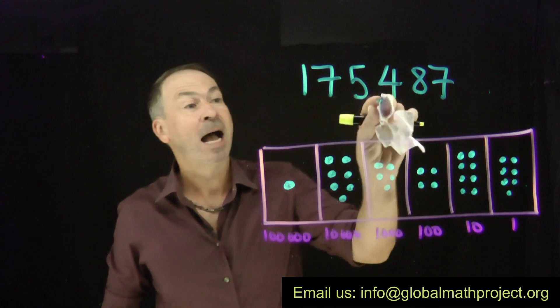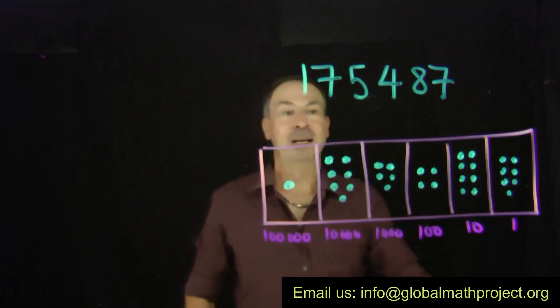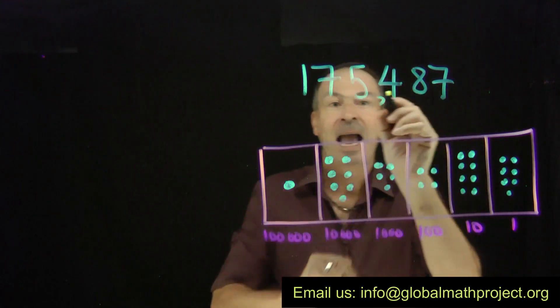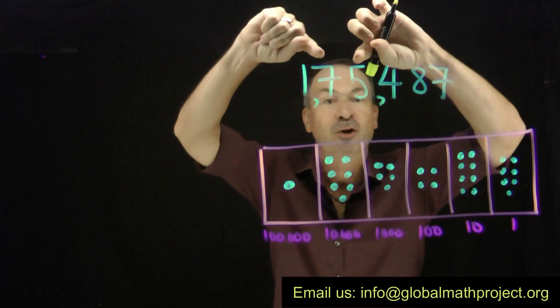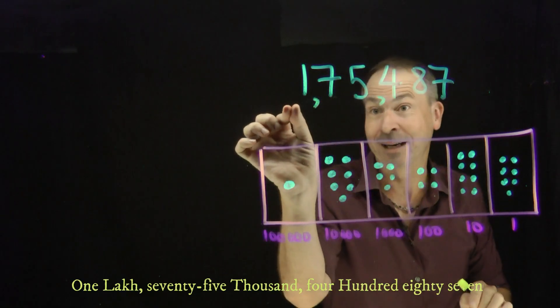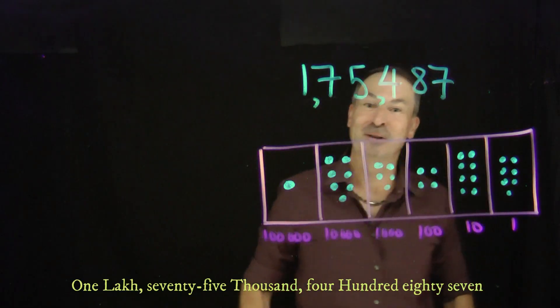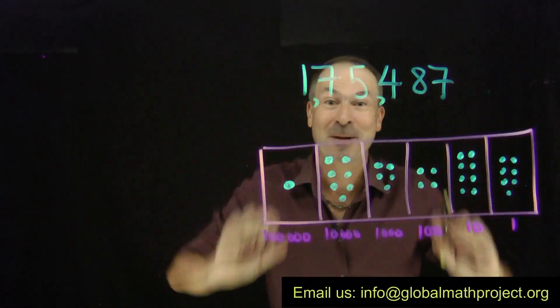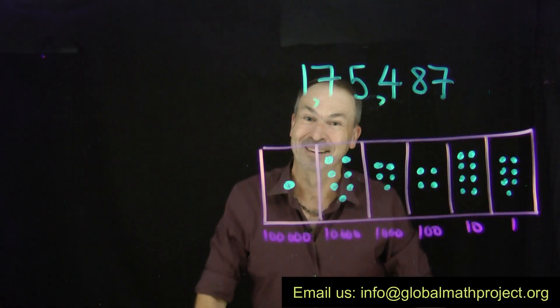In fact, in India, I know people there might do something different. They'll put a comma here to separate those three digits there for the units and then put a comma here for just 75,000s and pronounce this number as one lakh, 75,487. So even just writing the numbers in mathematics, there are so many wonderful variations. Tell us about it. It'd be great.